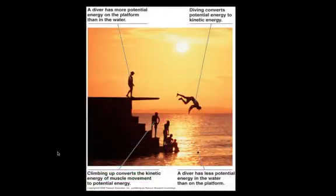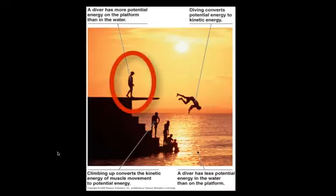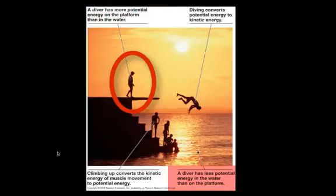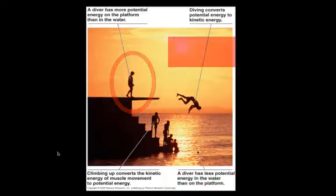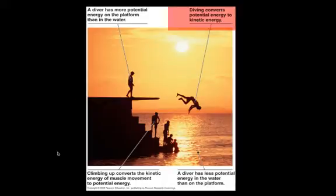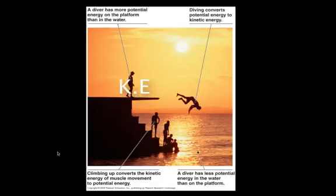Let me get back to the basic examples of potential and kinetic energy. Due to gravity, a diver high up on a platform has more potential energy than if he is down in the water. Diving converts the potential energy into kinetic energy and the work of moving him toward the water. When he hits the water, the kinetic energy dissipates into the water as a splash and ripples move out from him. The act of climbing is kinetic energy — as he climbs the steps, his kinetic energy is converted back into potential energy. Both forms of energy can be converted one into the other.